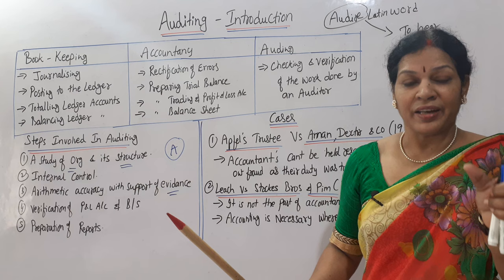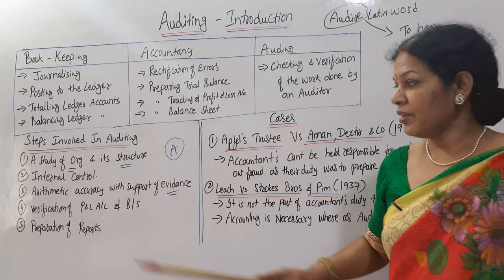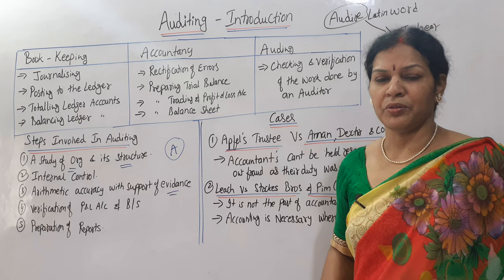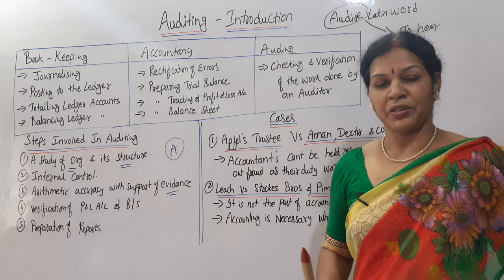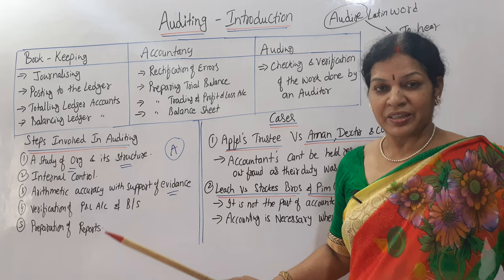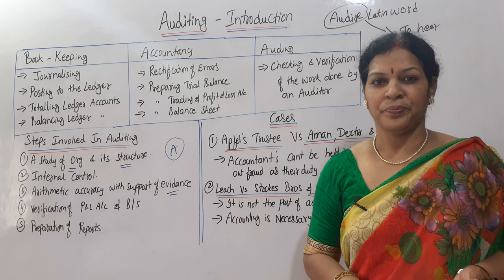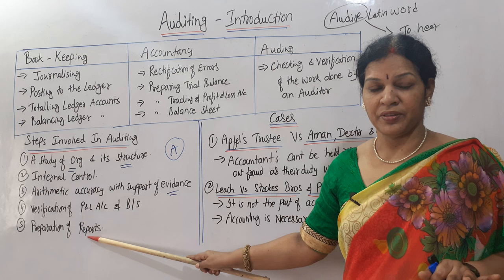After confirming arithmetic accuracy with evidence, the fourth step is verification of the profit and loss account and balance sheet. Once all entries are clearly maintained with proper support, the auditor verifies the profit and loss account and balance sheet. The fifth and final step is preparation of the audit report. The auditor prepares the report covering everything he has verified, including findings from the profit and loss account and balance sheet. Once the report is ready, his work is done.